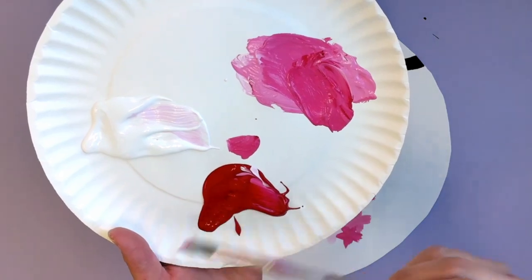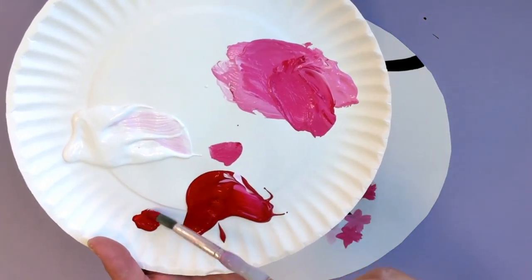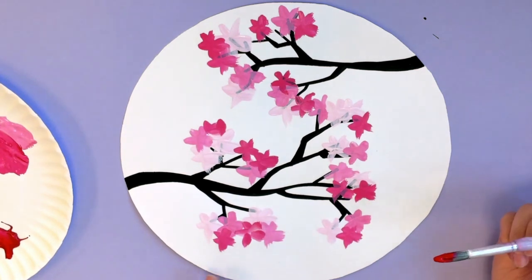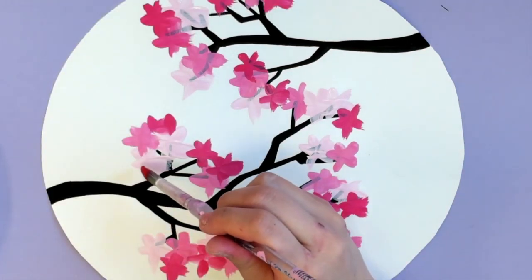This is something optional, but I'm going to pick up some red with my brush, and I'm going to make some dots in the middle of my flowers. I'm not going to do this to every single one, and I'm just going to add three or two dots on each one.